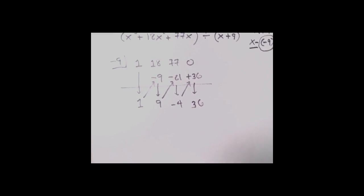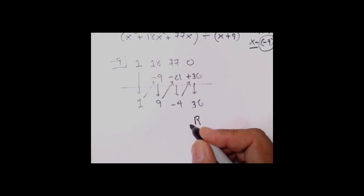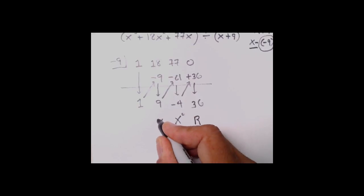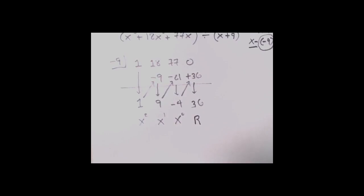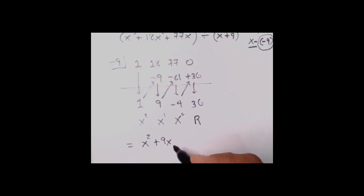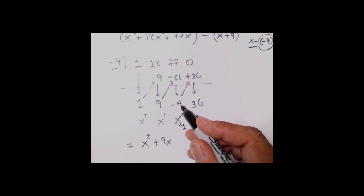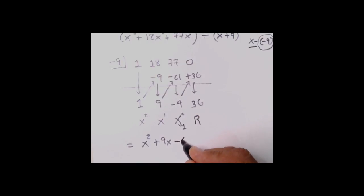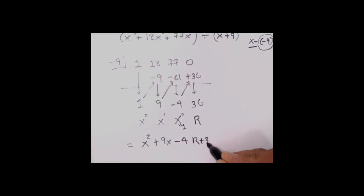Now put it back together: the rightmost guy is always your remainder. Then x to the zero, x to the first, x to the second. So here it comes: 1x squared which is x squared, plus 9x, minus 4 times x to the zero — and remember x to the zero is 1 — so negative 4 times 1 is negative 4. But we've got a remainder and it's positive: r plus 36.